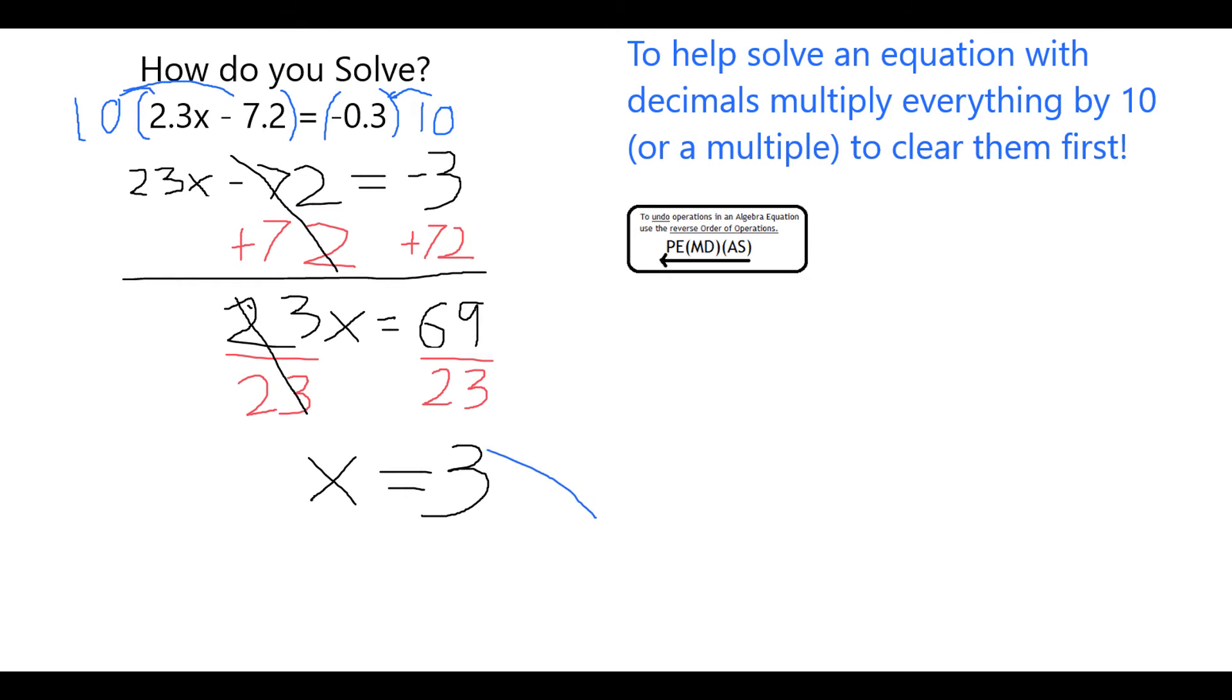Of course, they're not always going to come out this easy, but my main point here was to illustrate this concept that you can multiply everything by 10, or you can do it by 100 or 1000, depending on whatever you need in order to clear the decimals. And that's just one thing less you have to worry about as you're solving the problem. Hope that helps.